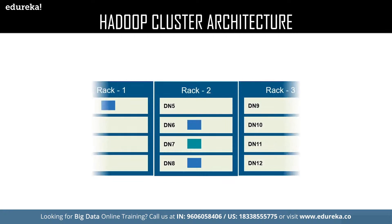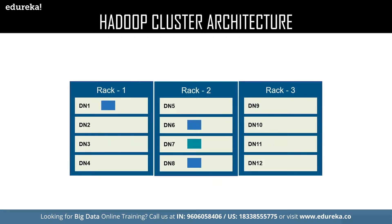Now let us deal with a different block. We have a new block in Rack 2, Data Node 7. Rack 2 is the local rack for this data block. The replicas of Data Node 7 are stored in the remote Rack 3, in Data Node 9 and Data Node 12. We also have a new data block in Data Node 11, and Rack 3 is the local rack for it. The replicas of Data Node 11 are stored in the remote Rack 1, in Data Node 2 and Data Node 4.